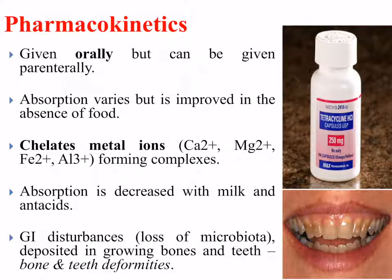In terms of pharmacokinetics, tetracyclines can be given orally or parenterally. Their absorption varies but is improved in the absence of food, as food can interfere with the absorption of certain chemicals. A notable feature is that tetracyclines can chelate metal ions such as calcium and magnesium, forming complexes. Their absorption is therefore decreased in the presence of milk and antacids, and this may be indicated on the instructions with this particular antibiotic.